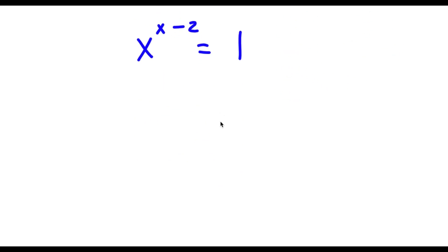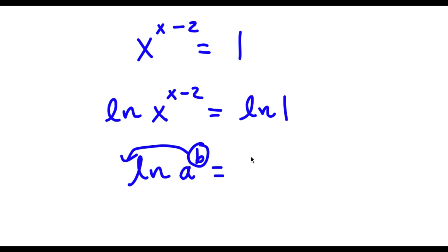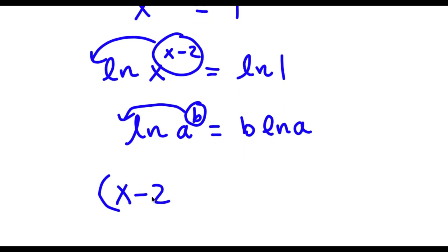Now I'm going to take the natural log on both sides. So now I have ln of x to the power of x minus 2 is equal to ln 1. Now if I have something in the form ln of a to the power of b, I can move the exponent b to the front, so this equals b times ln a. So here I can move x minus 2 to the front: x minus 2 times ln x is equal to ln 1.